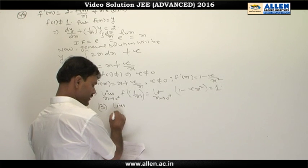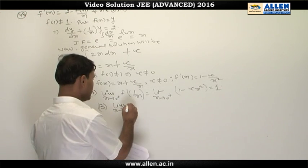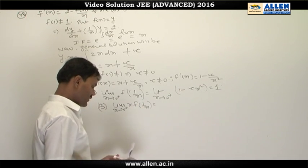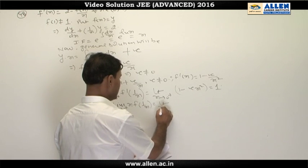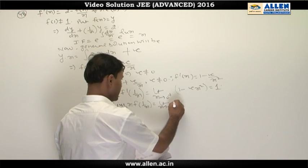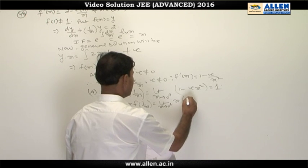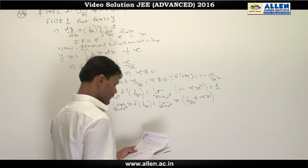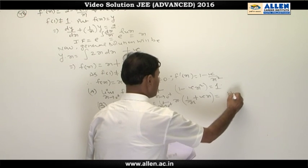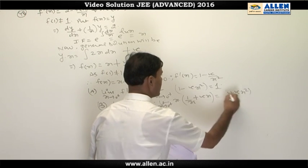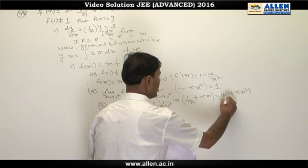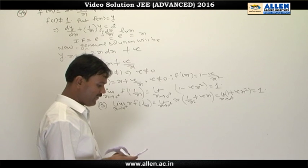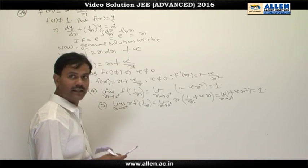Now coming to option B, we have to find the limit as x → 0+ of x·f(1/x). This equals the limit as x → 0+ of x·(1/x + c·x) = 1 + c·x², and taking the limit as x → 0+ gives 1. But the given value in option B differs, so option B is incorrect.